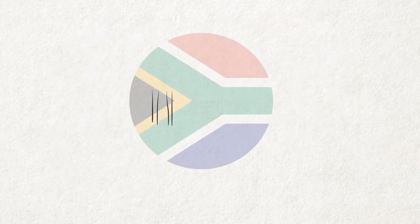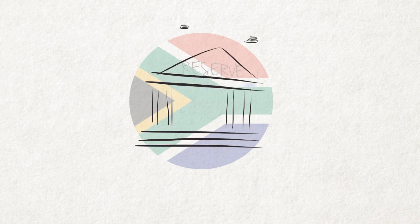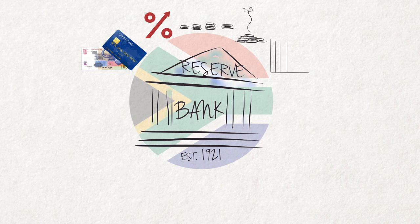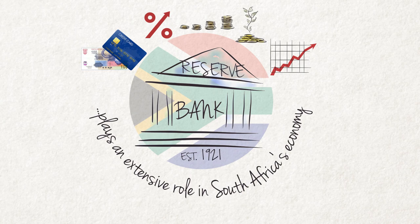Conclusion: The South African Reserve Bank's role has become entrenched in the domestic economy since its establishment in 1921. Given its extensive role in the economy, it is hard to imagine that the country functioned without a central bank for many years. But back then, the economy and the financial structure were much less sophisticated than is the case today.